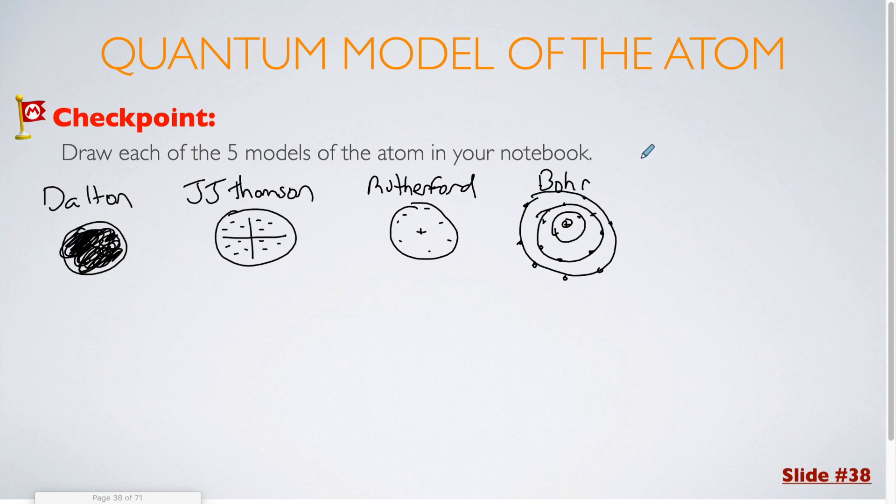And then finally, we have Schrödinger's model, or the cloud model. For that one, you are still going to have a positive nucleus, but then you are going to have a cloud of electrons somewhere outside of that. You can have that shaded in as some kind of cloud of potential where the electrons could potentially be, with a positive charge in the center.